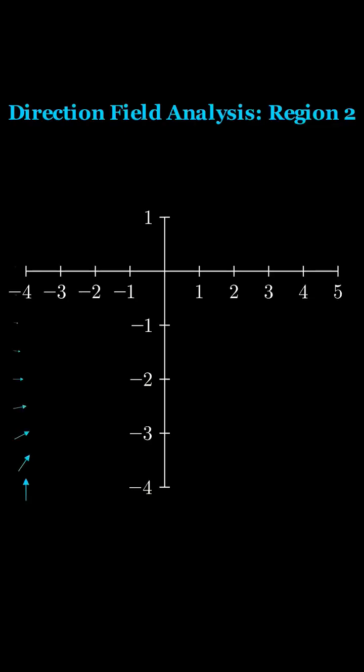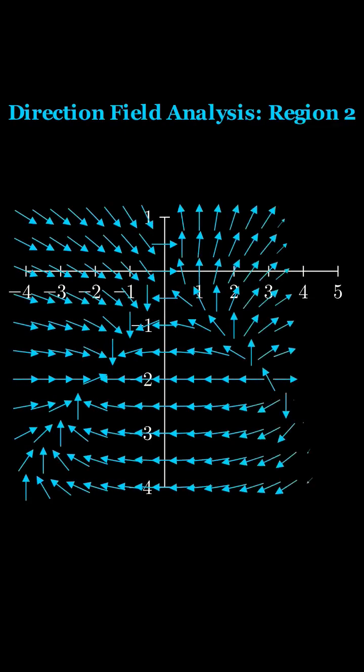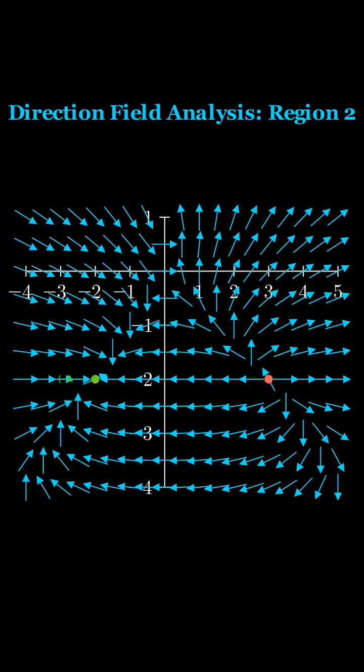Let's move to the second region containing the critical points negative 2 comma negative 2 and 3 comma negative 2. I'll display the direction field for this region. Notice the different scale and the location of these points.